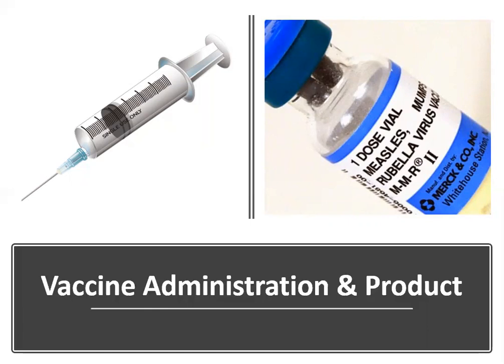First up, codes 90460 and 90461 are for immunization administration for patients through age 18 during encounters for which counseling has been provided to the patient's family regarding the vaccine. Two things must be present: the patient must be through age 18 and counseling must be provided during this encounter. Code 90460 is for each vaccine administered. If the patient has vaccines with multiple components — combined vaccines — you report 90460 with 90461 for each additional vaccine component.